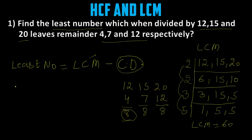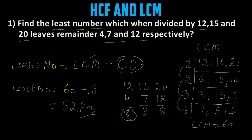So we can easily find the least number. Least number = 60 minus 8 = 52. That is our answer. Remember, friends: wherever you have to find the least number, the first thing you have to do is find the LCM.